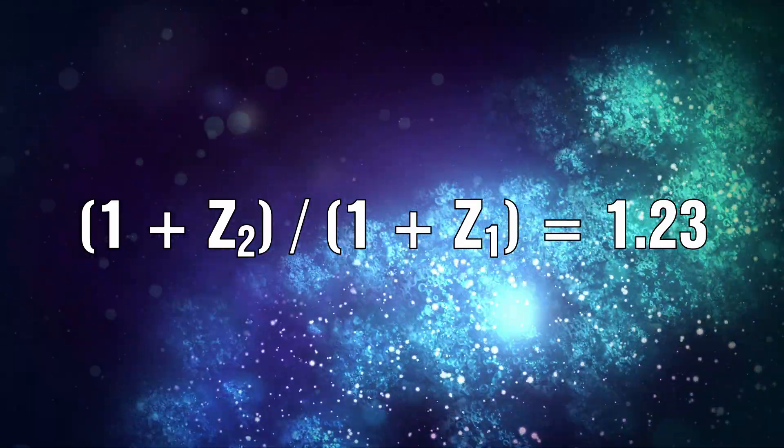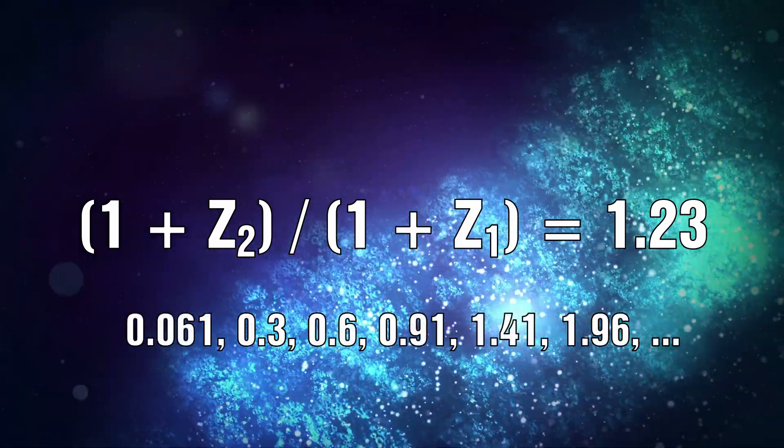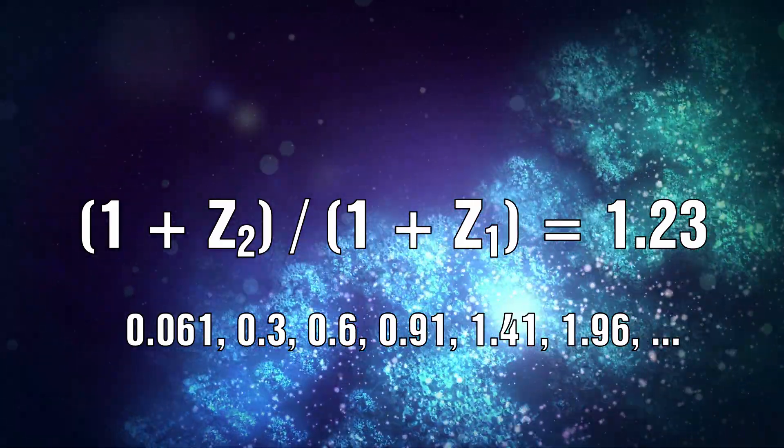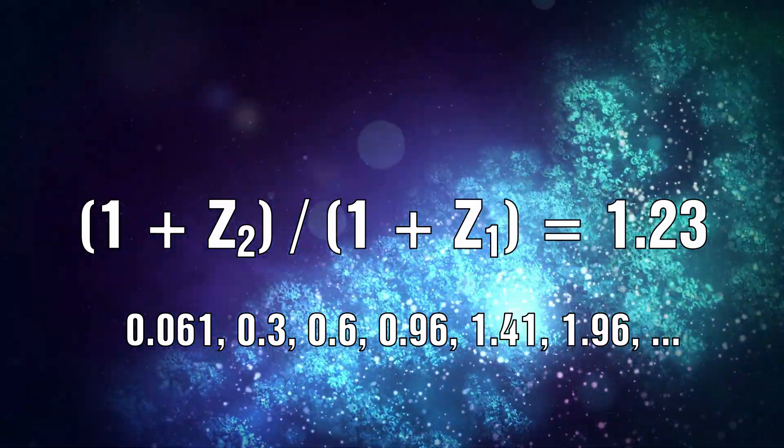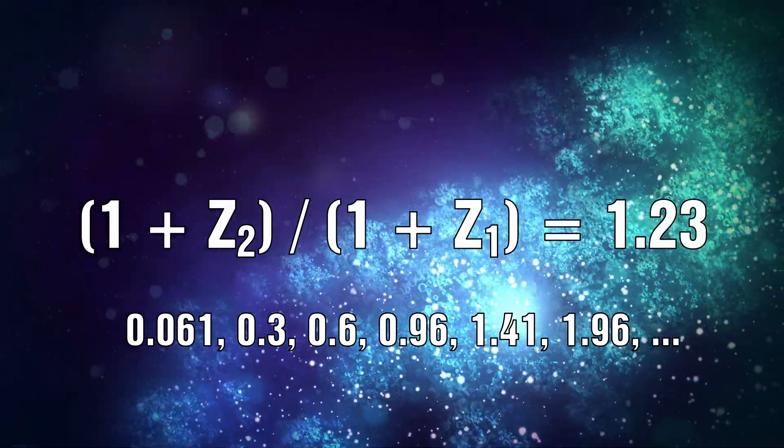This gives observed quasar redshift periodicity of z1 equals 0.061, 0.3, 0.6, 0.91, 1.41, 1.96. Sadly no one in the mainstream took any notice of this.